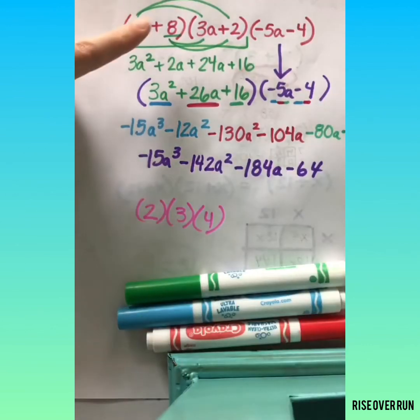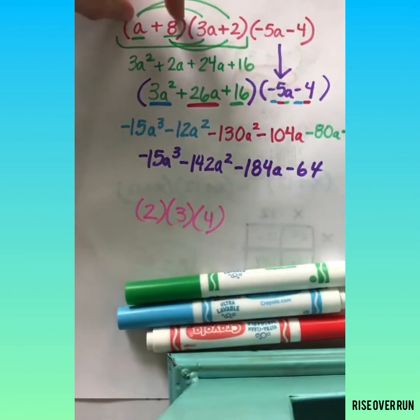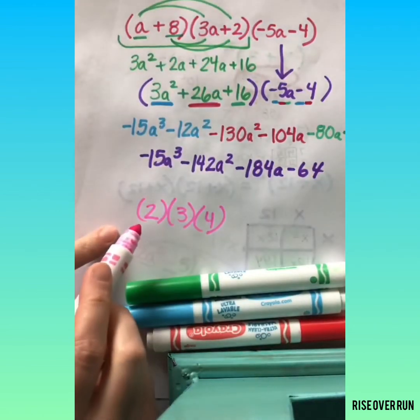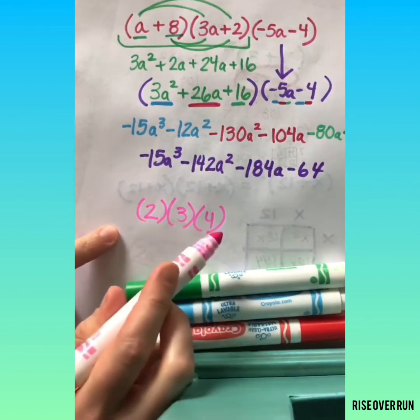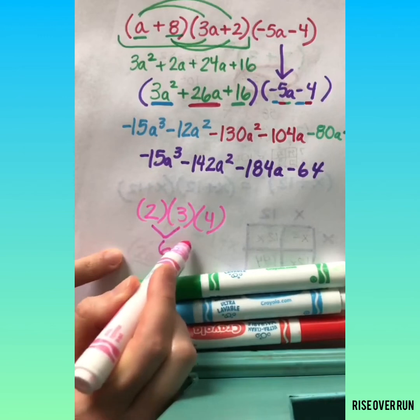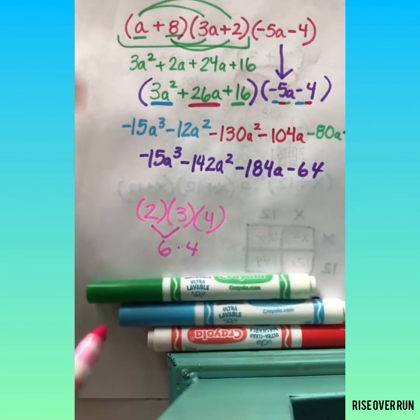Keep in mind when you're multiplying more than one polynomial, these are each factors here. So we have three factors. Think about how you would multiply 2 times 3 times 4. You would multiply 2 times 3. And then you would multiply it by 4. Same thing works for polynomials.